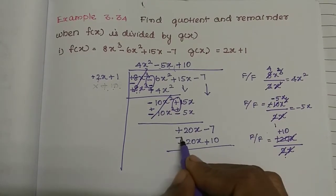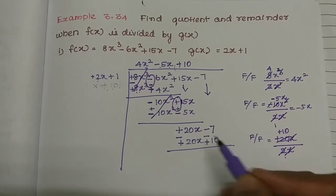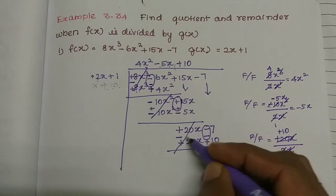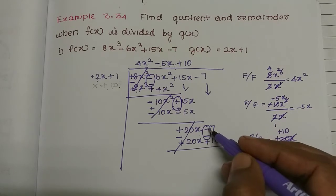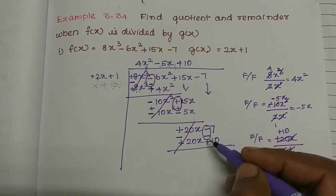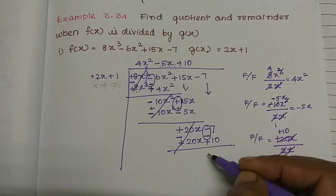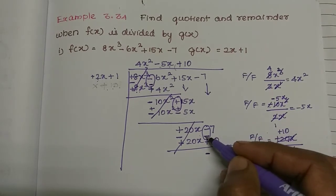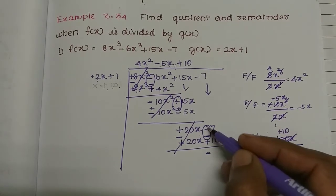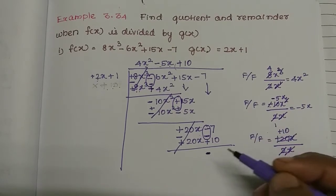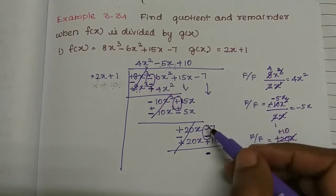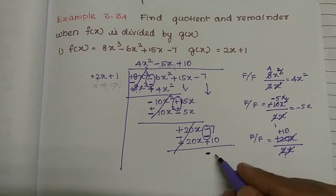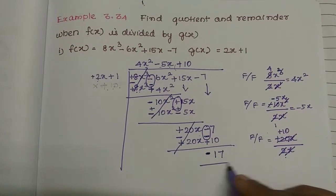Now we change the symbol. In this group, plus 20x minus 20x cancels to zero. Then 7 plus 10 is 17. This single number is too small to divide further.